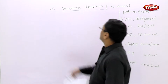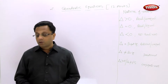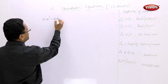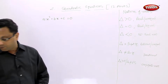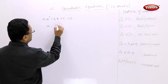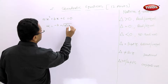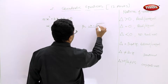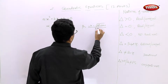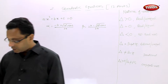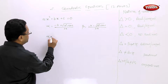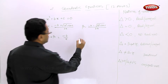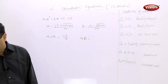In our quadratic equation chapter, let us see the relation between roots and coefficients. If ax² + bx + c = 0 is the given quadratic equation, the roots are alpha = (-b + √(b²-4ac)) / 2a and beta = (-b - √(b²-4ac)) / 2a. The relation is: sum of roots, alpha + beta = -b/a, and product of roots, alpha × beta = c/a.